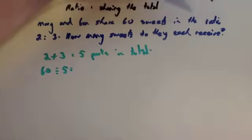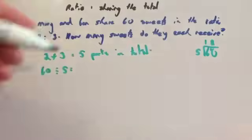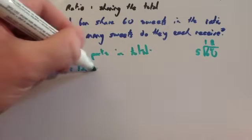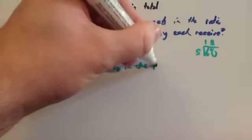60 divided by 5. 5 into 6 goes once, remainder 1. 5 into 10 goes twice. So you're going to get 12 sweets in 1 part.